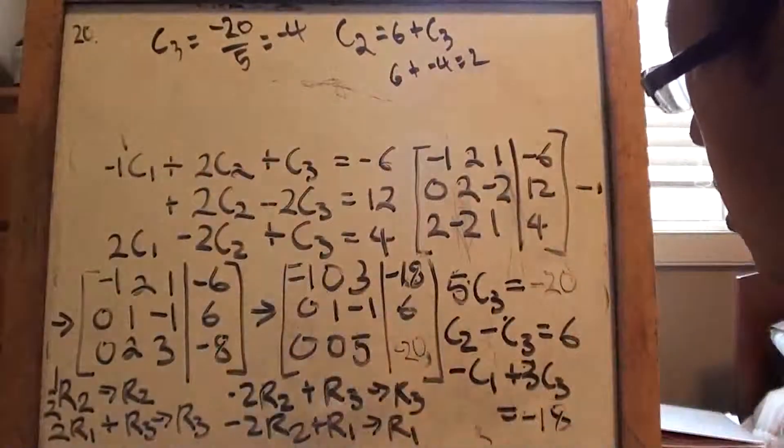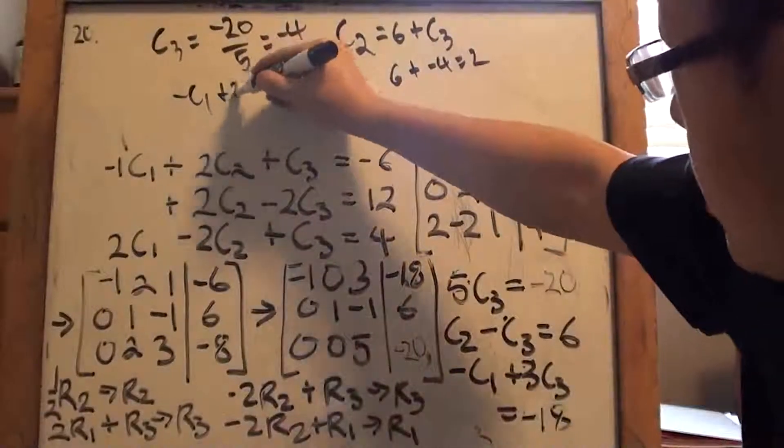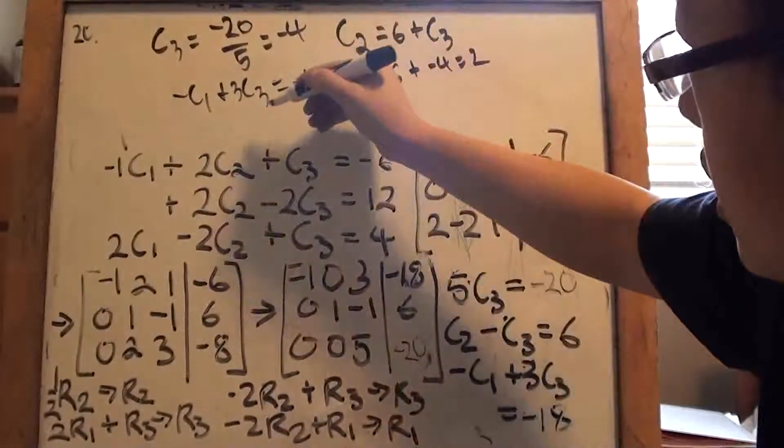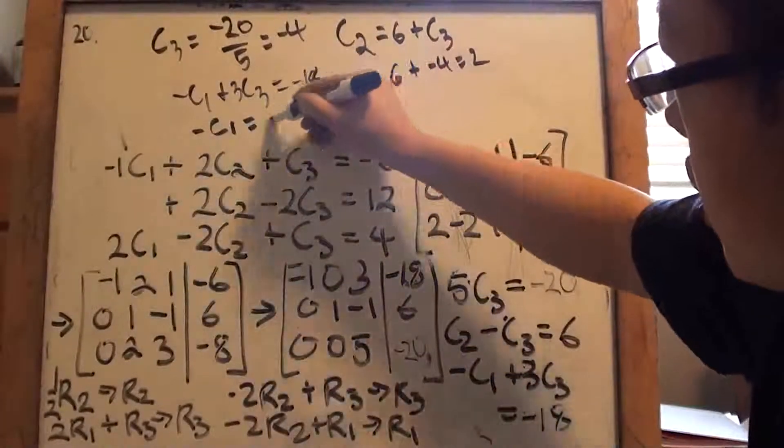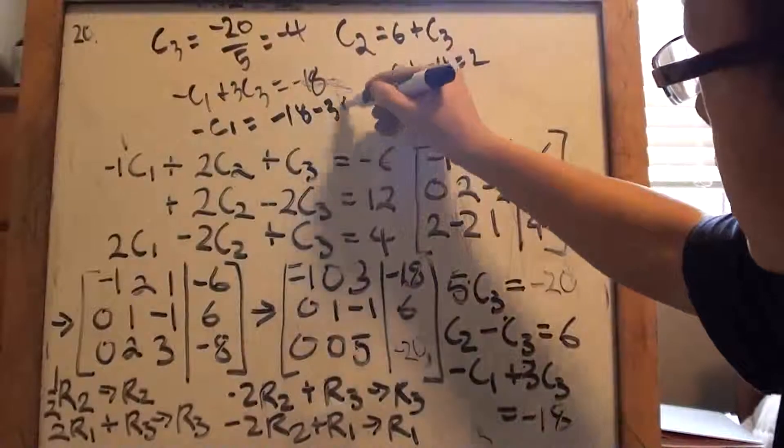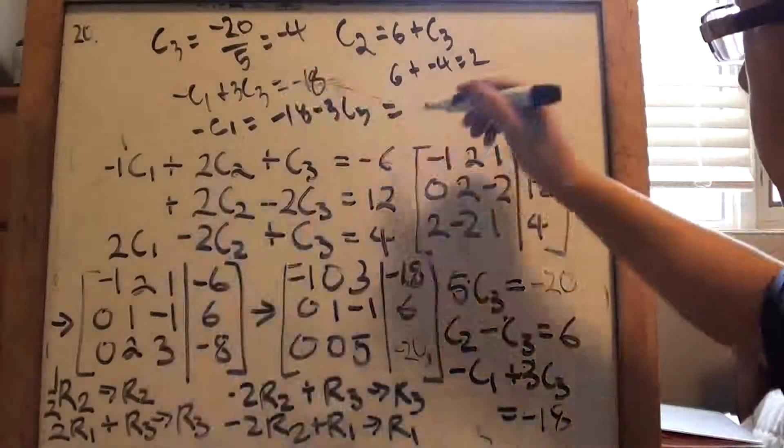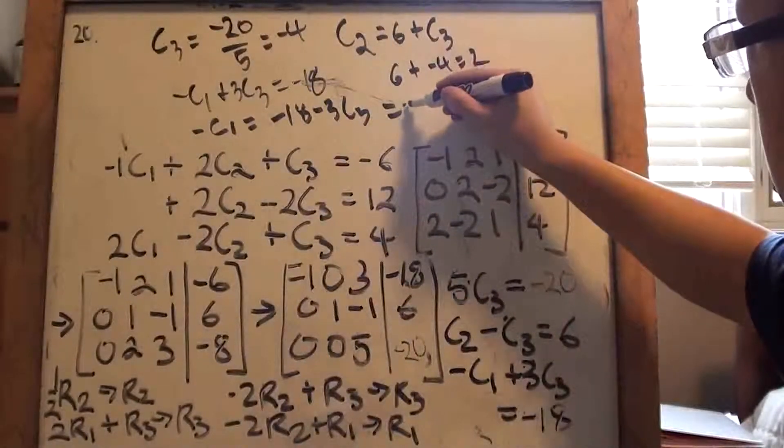And then c1 is gonna be, oh, no, what am I doing? So that's gonna be negative c1 plus 3c3 equals to negative 18. So that's the same thing as, c1 negative equals to negative 18 minus 3c3. That's gonna be, what was it? Negative 4, so that's gonna...